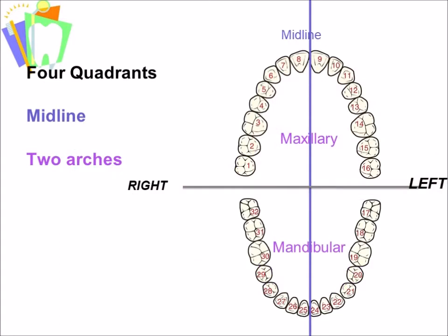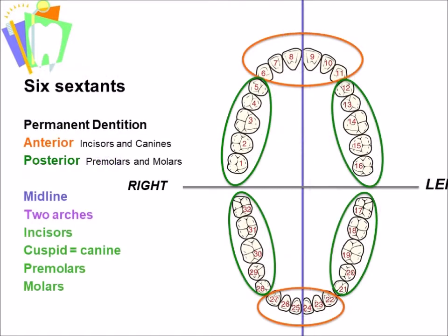Each quadrant has the same number of incisors, the same number of canines, the same number of premolars, and the same number of molars. For humans, each quadrant will have the same number of each classification of tooth. We separate the anterior sextants from the posterior sextants between the first premolar and the canines — like between number 5 and 6, or on the lower between 27 and 28.